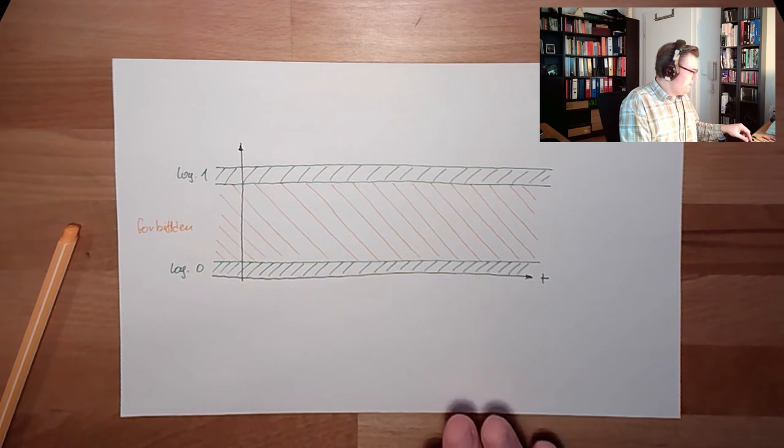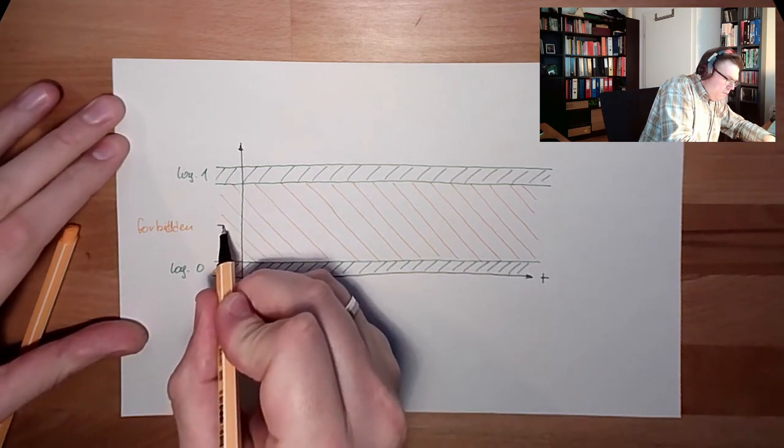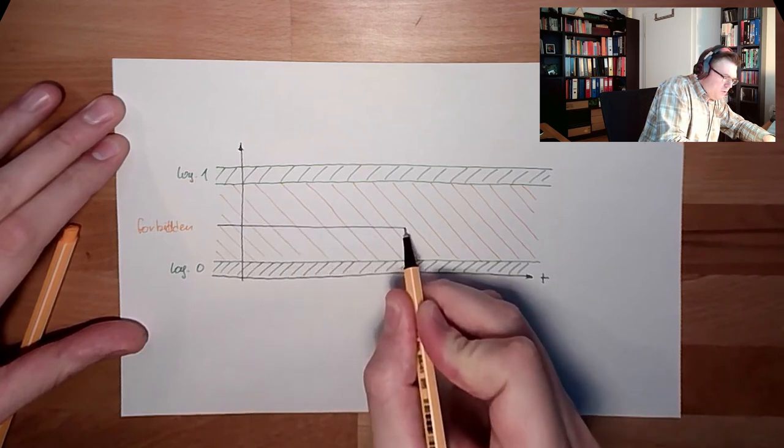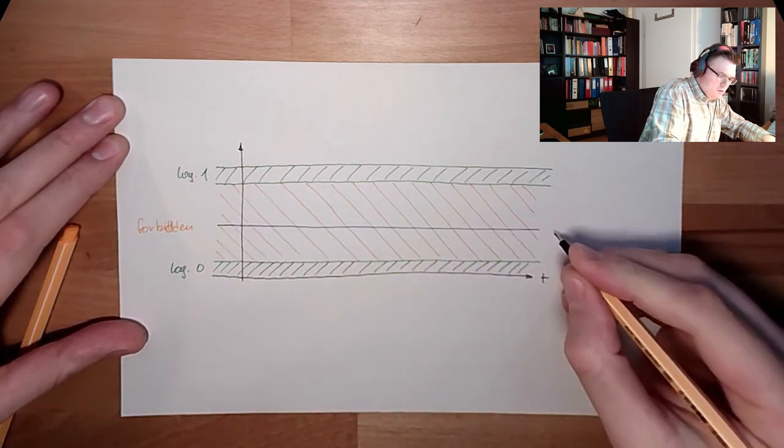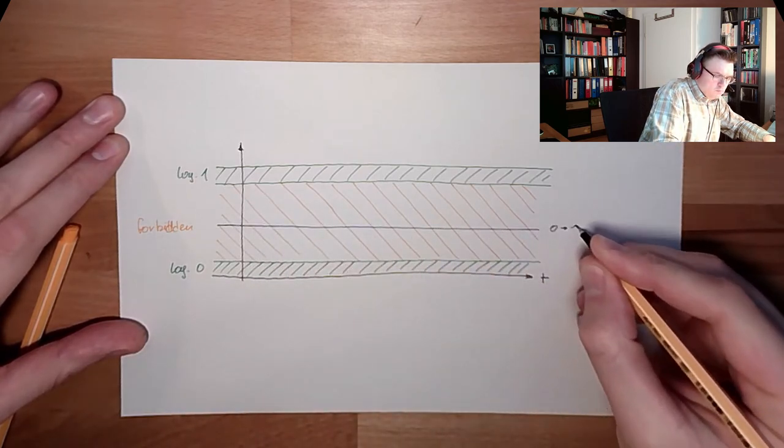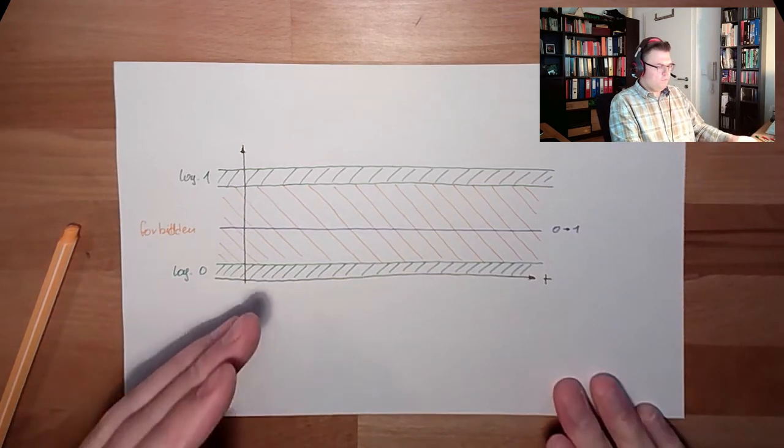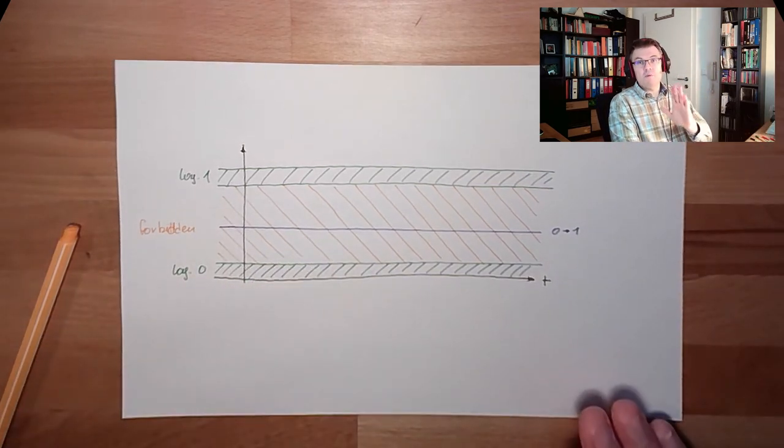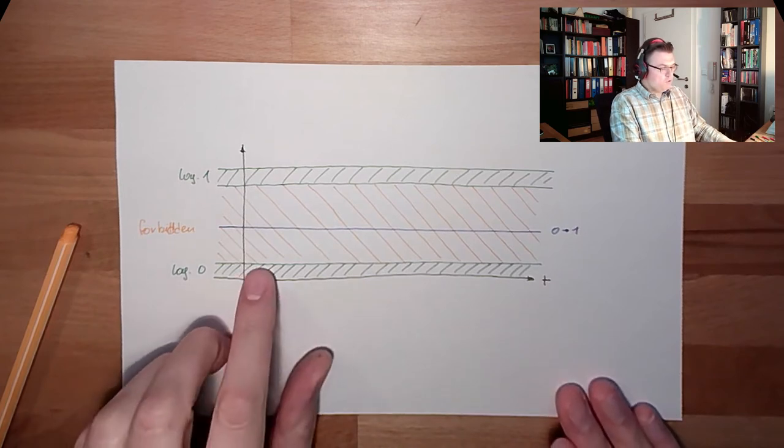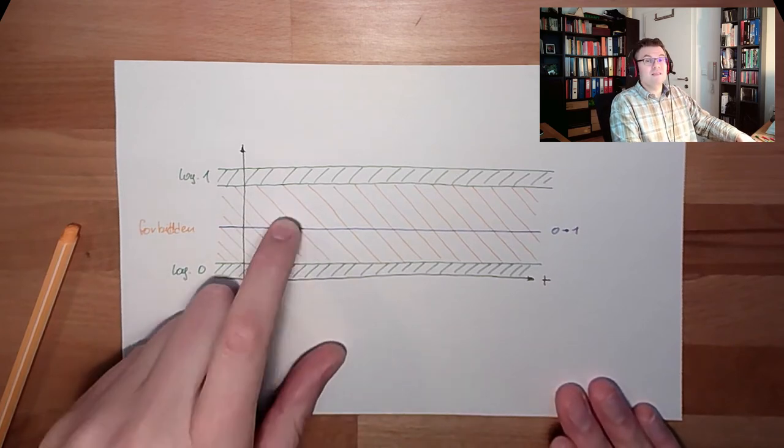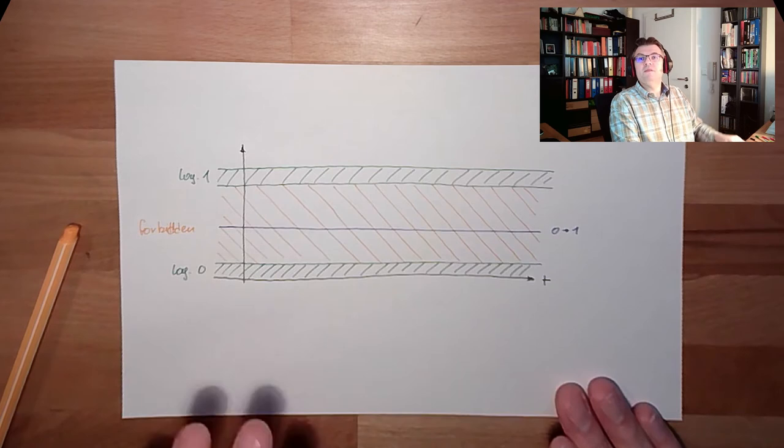Because every element has somewhere a certain level where it will switch from zero to one. If the voltage is increasing, this is a sharp edge, by the way. If the voltage is increasing above this level, it will be interpreted as one.